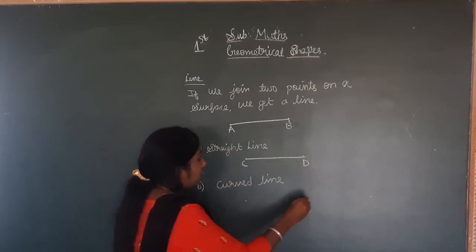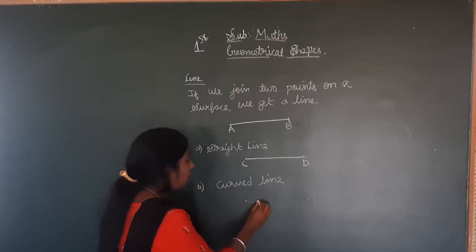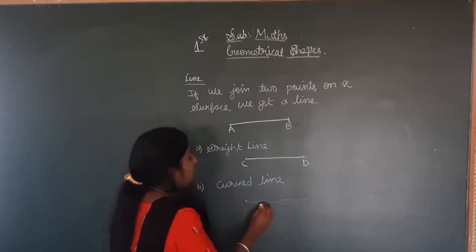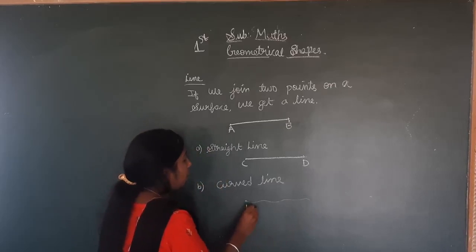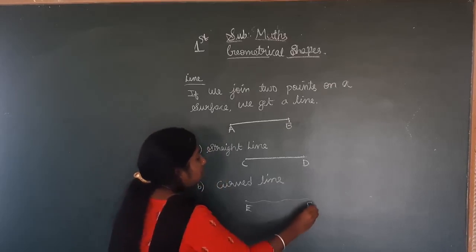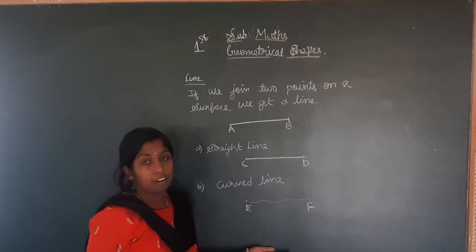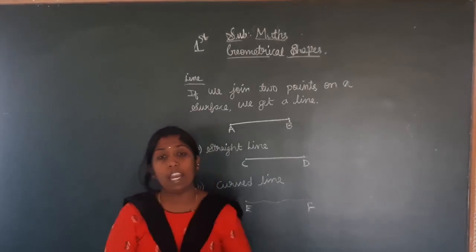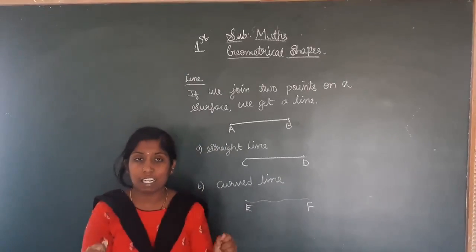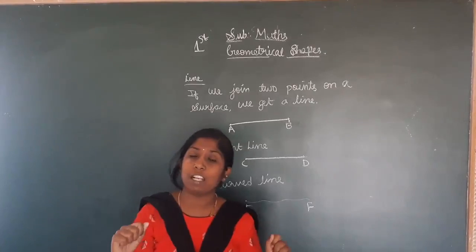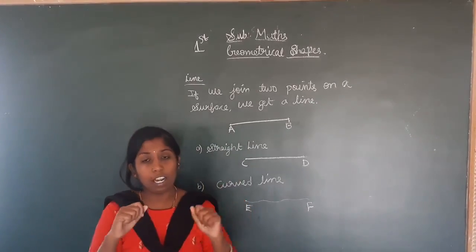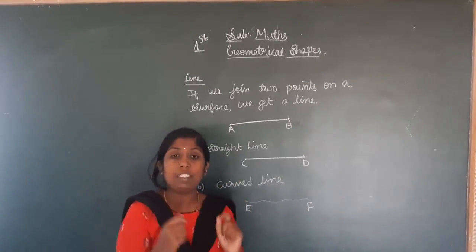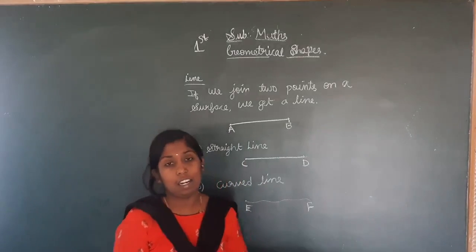If I join these both points loosely, it becomes a curved line. In the same way, if I hold anything tightly, it becomes straight. If I hold anything loosely, it becomes a curved line.